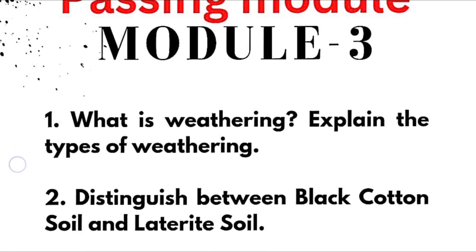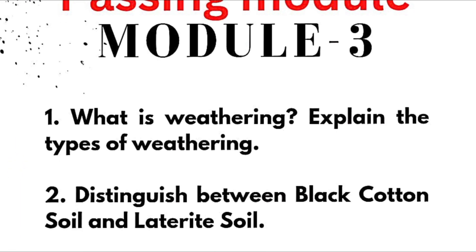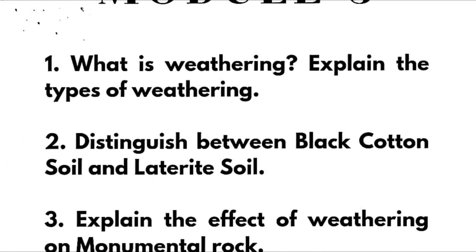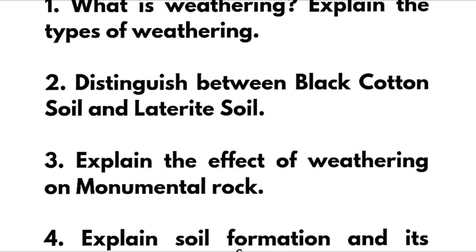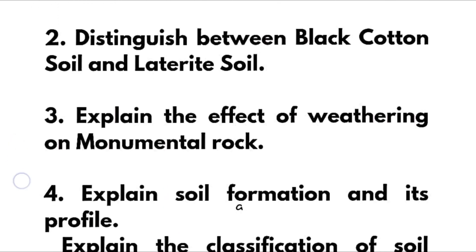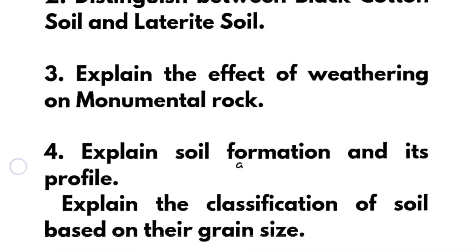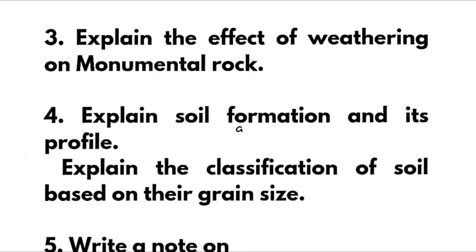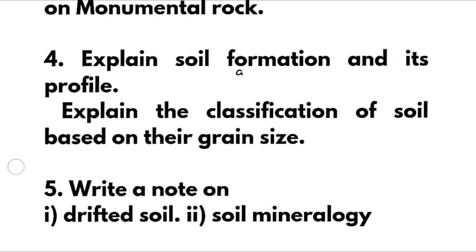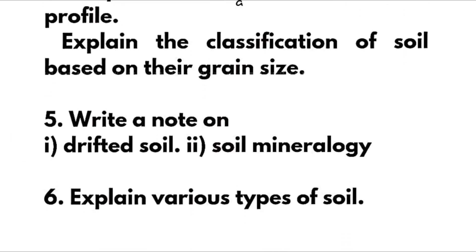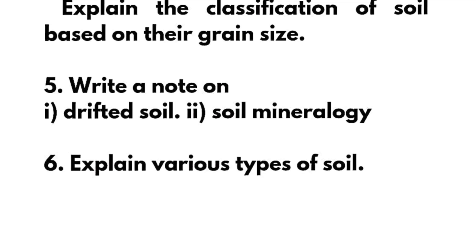That is all about Module Two. Coming to Module Three, which is again a passing module. Cover these super important questions: what is weathering? Explain the types of weathering. Distinguish between black cotton soil and laterite soil — super important. Explain the effect of weathering on monumental rock. Explain soil formation and its profile. Explain the classification of soil based on grain size. Write short notes on drifted soil and soil mineralogy. Explain various types of soil.